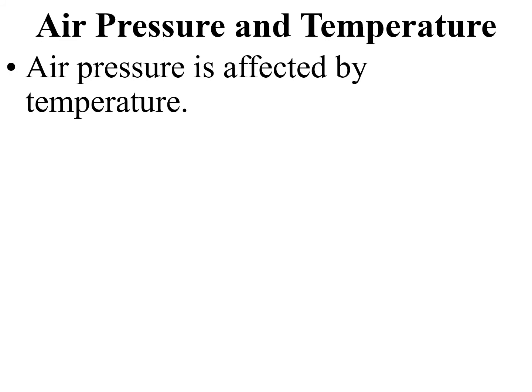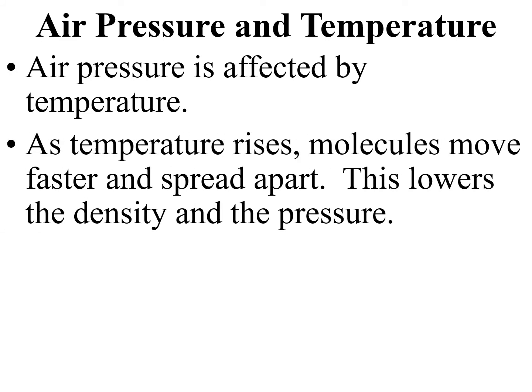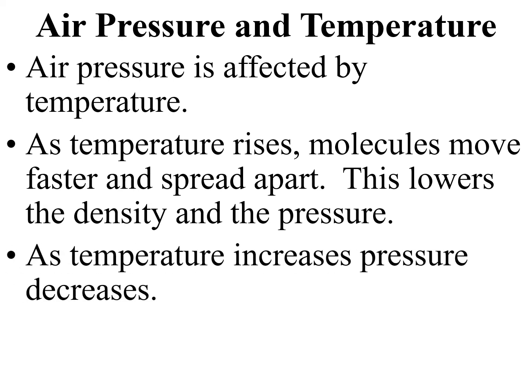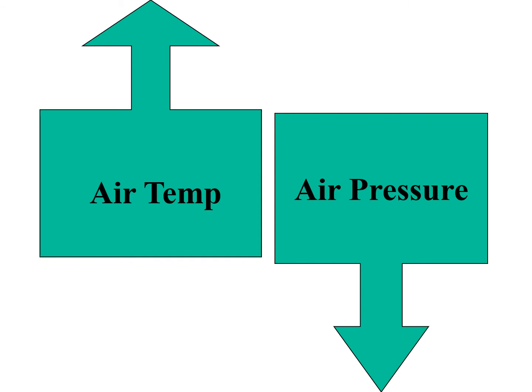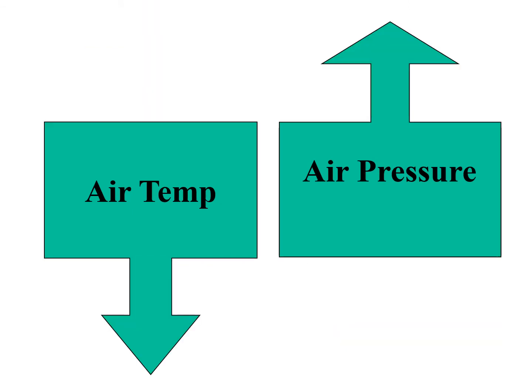Air temperature and pressure: air pressure is affected by temperature. As the temperature rises, molecules move faster, so they spread apart. This lowers the density and the pressure. As the temperature increases, pressure decreases. So these variables are opposites of each other. As the temperature decreases, pressure increases. Air temperature up, air pressure down; air temperature down, air pressure up.